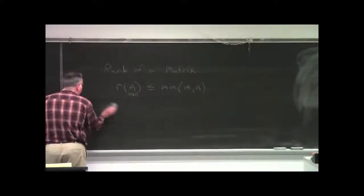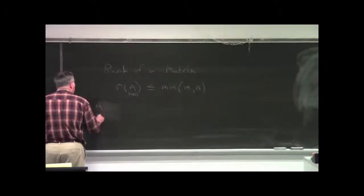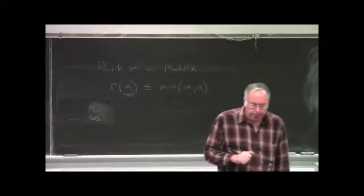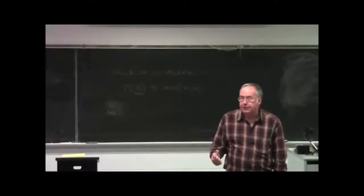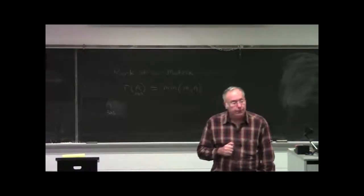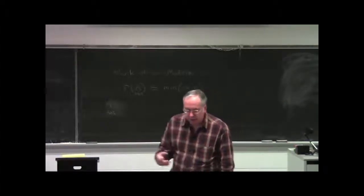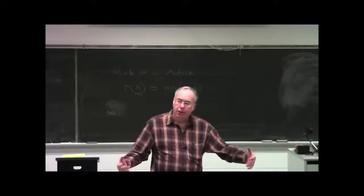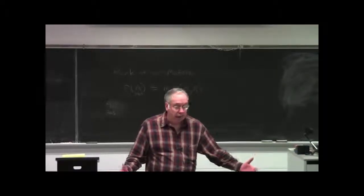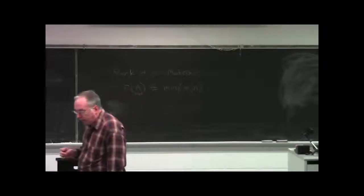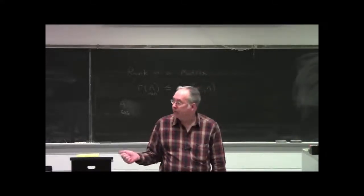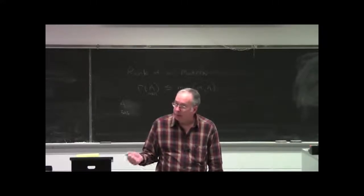Suppose A is, say, a 3 by 3. And suppose you find the determinant of A is not 0. Then what is the rank of A? It has to be 3. Because if the determinant is not 0, that means the rows, the 3 rows, are linearly independent. So, it would mean the rank of A would be 3. But if you find the determinant is 0, then you know the rank of A is less than what? Less than 3. It could be 2, it could be 1, but it has to be less than 3.